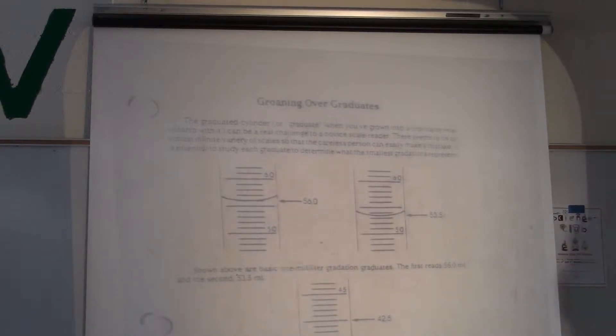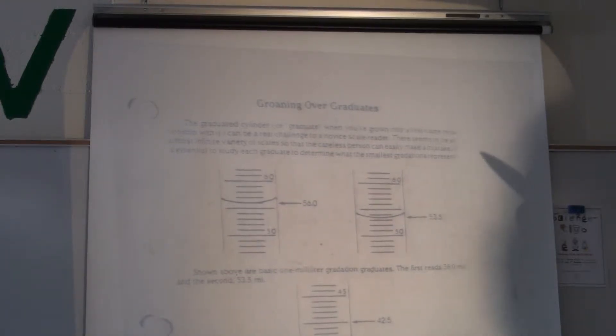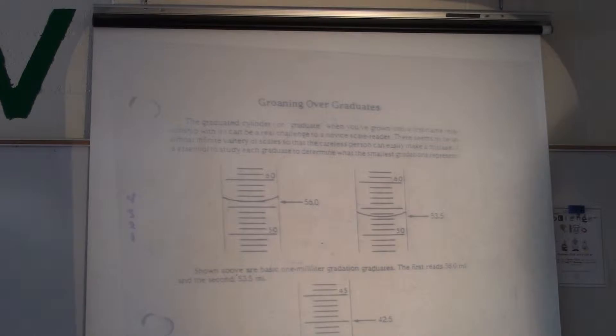But if your graduated cylinder goes up by ones, so that's 51, 52, 53, 54, 55. If they go up by ones, then you guess out to the tenth place.